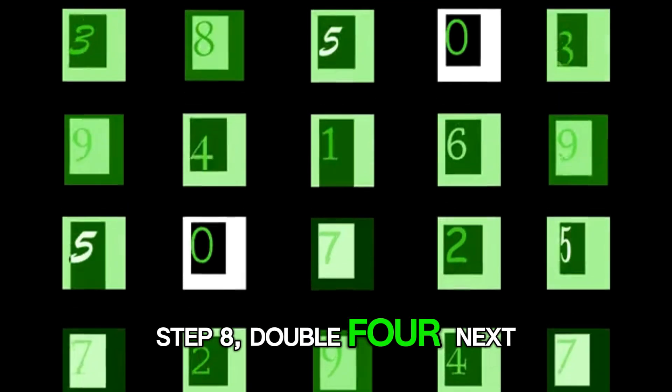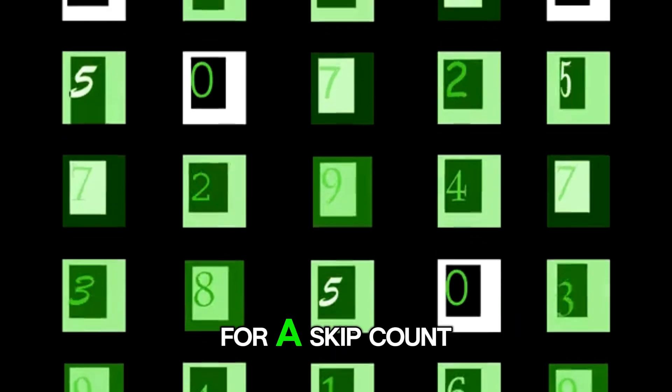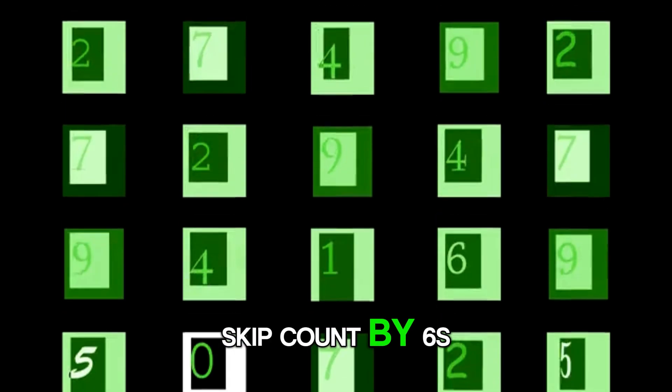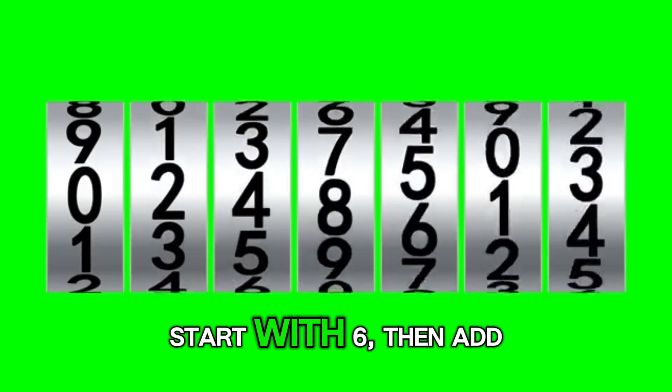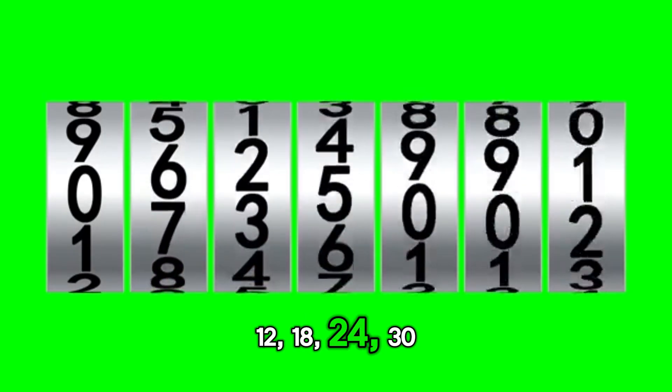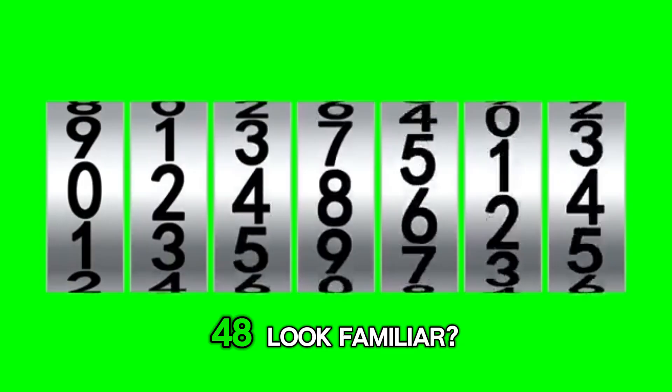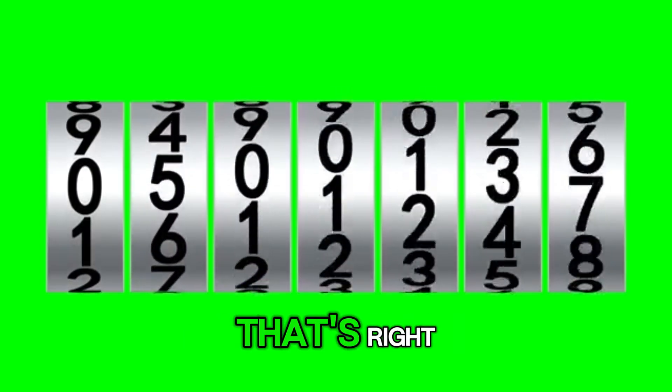Step 8. Double 4. Next up, 6 times 8 equals 48. Time for a skip count. Skip count by 6. Start with 6, then add 6: 12, 18, 24, 30, 36, 42, 48. Look familiar? That's right.